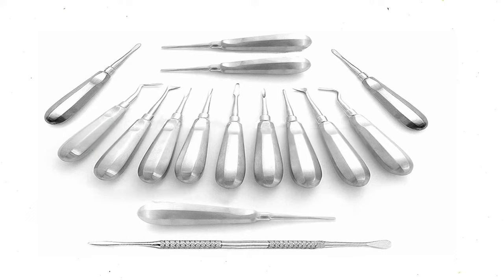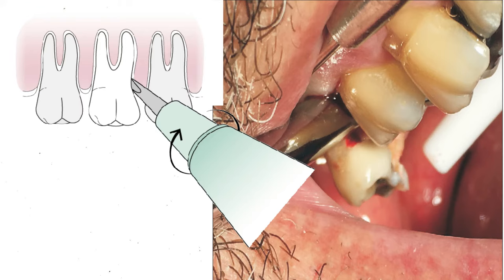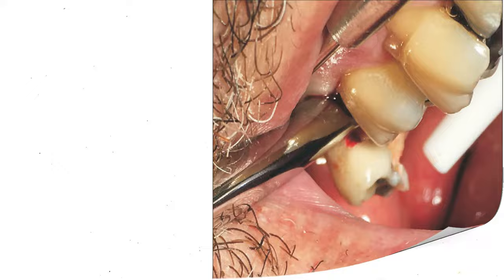The elevator is the second most important instrument, after the extraction forceps, with which tooth extraction is achieved or aided. It is composed of three parts: the handle, the shank, and the blade.